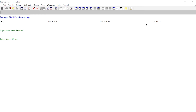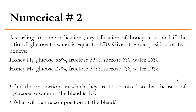Now we move to numerical number two, which is more complex because it contains more components. According to some indications, crystallization of honey is avoided if the ratio of glucose to water equals 1.7. Given two honeys: H1 — glucose 35%, fructose 33%, sucrose 6%, water 16%; H2 — glucose 27%, fructose 37%, sucrose 7%, water 19%. Find the proportions in which these two must be mixed so that the glucose-to-water ratio in the blend is 1.7, and find the composition of the blend.